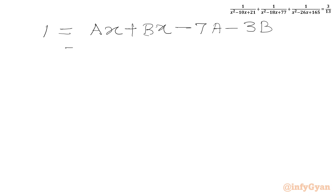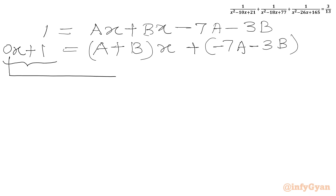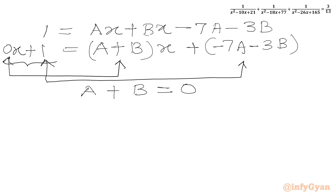Taking x common from the right-hand side, we write (A plus B)x plus (minus 7A minus 3B) equals 1. Now we compare coefficients on both sides. The left-hand side has no x term, so we compare: A plus B equals 0, and the constant gives minus 7A minus 3B equals 1, i.e., 7A plus 3B equals minus 1.